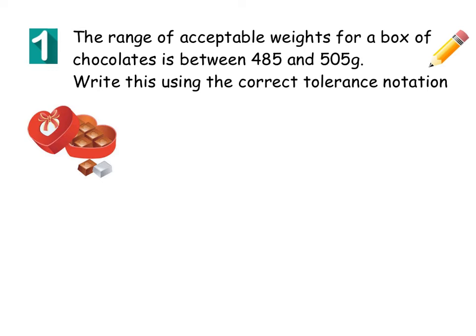So let's have a look at question one. So when making boxes of chocolates and things, they're never all the exact same weight, right? There's always a degree of inaccuracy. But an acceptable range of values for a box of chocolates is between 485 and 505 grams. We have to write this using the correct tolerance notation.